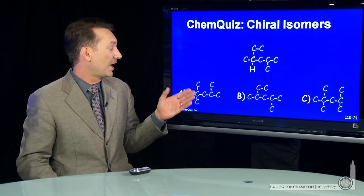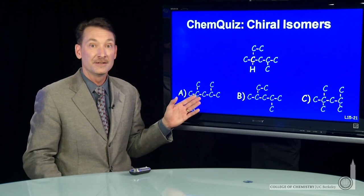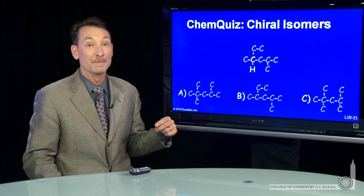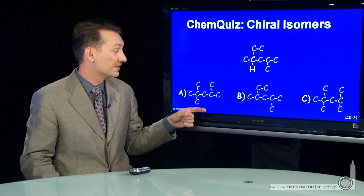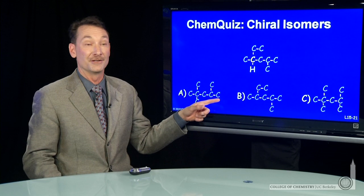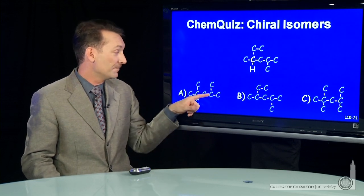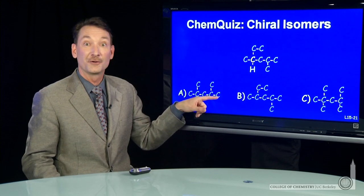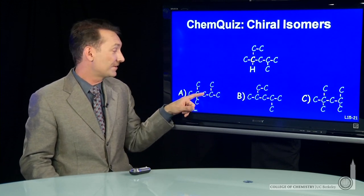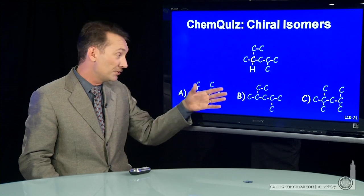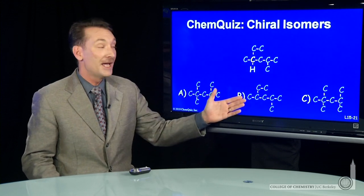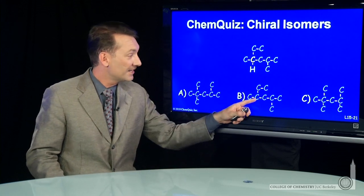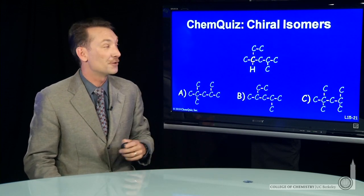In molecule A, if you look through all the carbons, each one has at least two substituents the same. I haven't drawn the hydrogens, but clearly this carbon has three hydrogens, this carbon has three, this carbon here has two methyl groups that are exactly the same, and this carbon here has two hydrogens. You'll find that there's only one carbon among these that has four different things attached, and it's the second carbon in answer B.